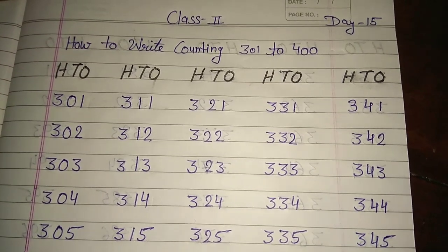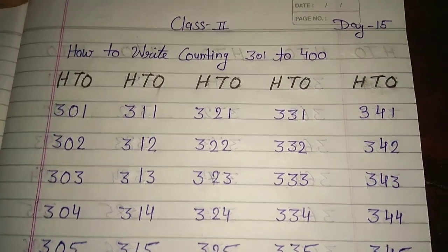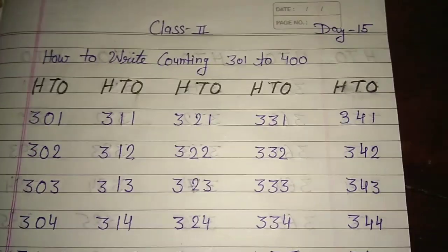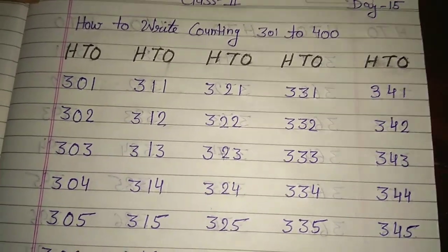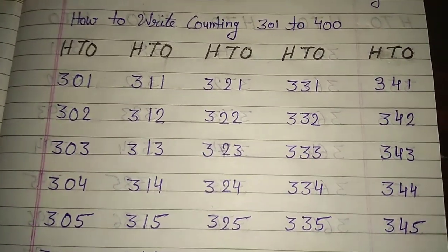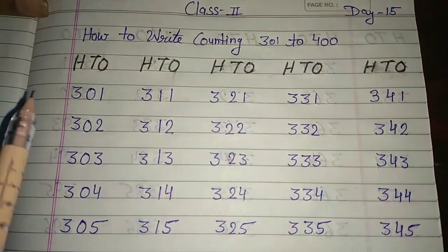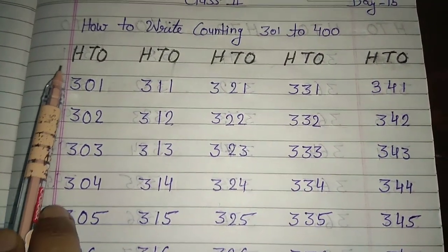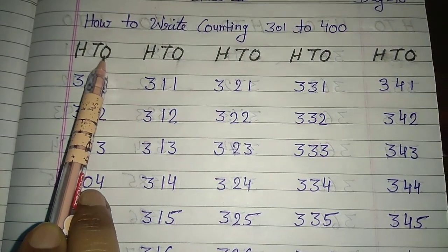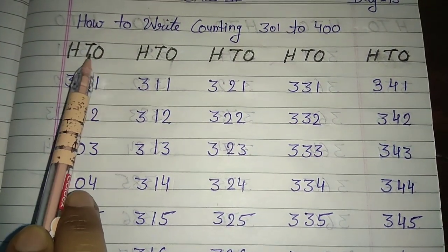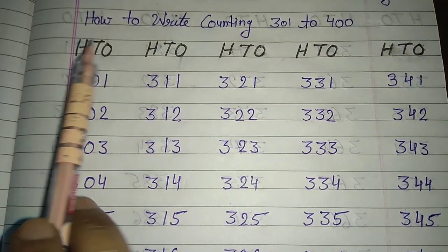Dear students, today we will continue our classes. The topic for today will be how to write counting from 300 to 400. First of all, write down H, T, O — O means ones, T means tens, and H means hundreds.